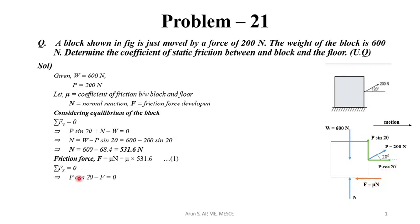P cos θ is positive, F is negative. So P cos θ - F = 0. For F, we substitute the value μN. That is, 200 cos 20 - μ × 531.6 = 0.